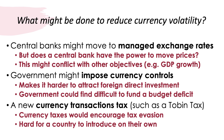On the Tobin tax: in theory it should work, but in practice any new tax encourages evasion, avoidance, and disintermediation — people find ways around it. It's also very difficult for a single country to introduce the Tobin tax unilaterally. It would likely need to be adopted by a significant number of major countries to make a real difference to total speculative currency volumes. There are limits to what a single nation can achieve.